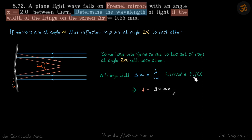Where we had two parallel beams which were at an angle theta, and delta x in that case was lambda by theta. In this case, the angle between them is 2 alpha, so delta x is lambda by 2 alpha.